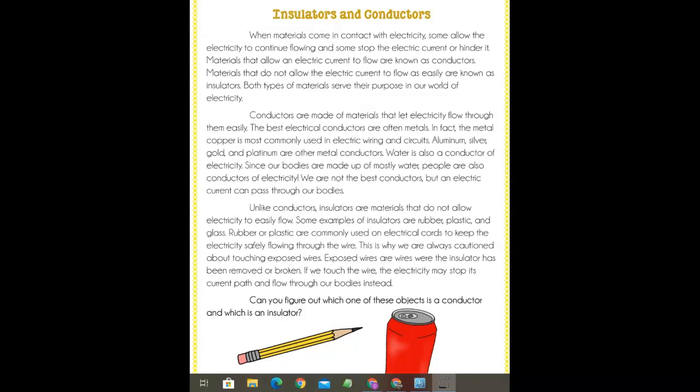Conductors are made of materials that let electricity flow through them easily. The best electrical conductors are often metals. In fact, the metal copper is most commonly used in electric wiring and circuits. Aluminum, silver, gold, and platinum are other metal conductors.